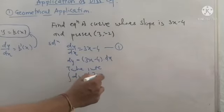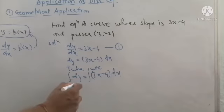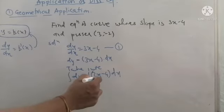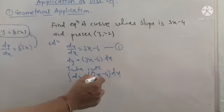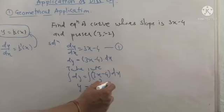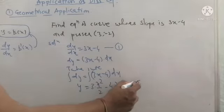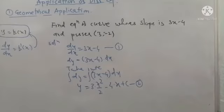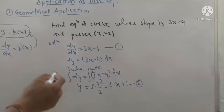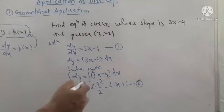Integrating both sides: the left gives y. On the right, since there is a subtraction, we integrate each term separately — 3 is a constant so x integrates to x squared by 2, giving 3x squared by 2; and minus 4 integrates to minus 4x. Adding the constant C, this is the equation of the curve.